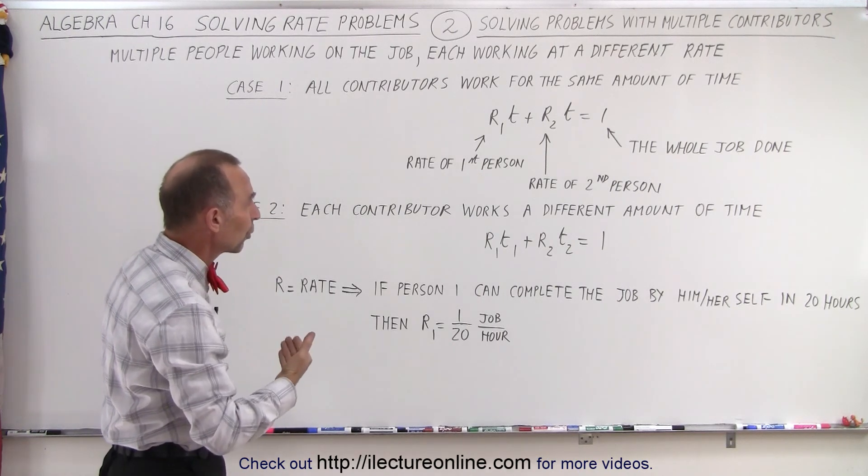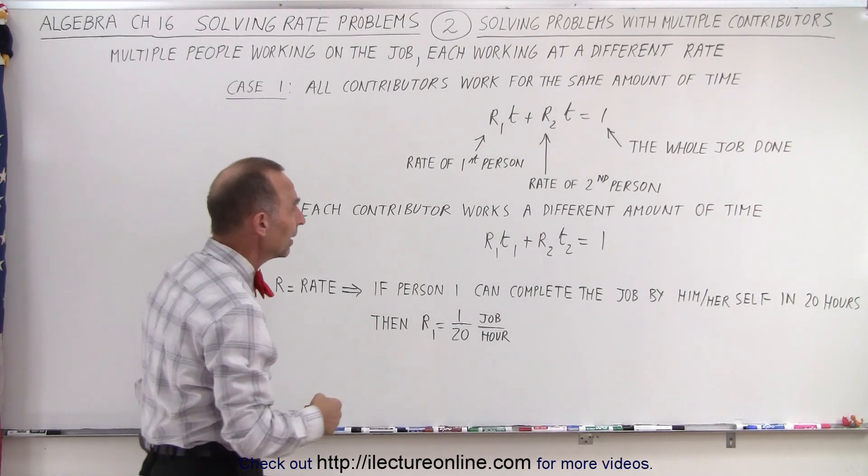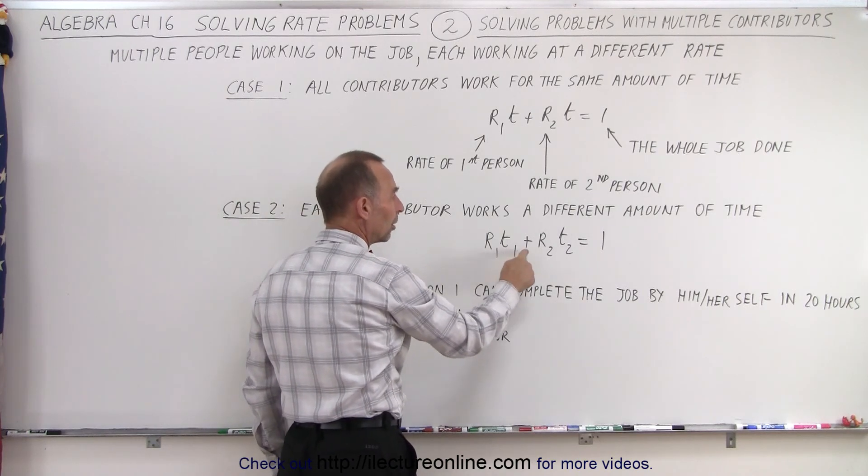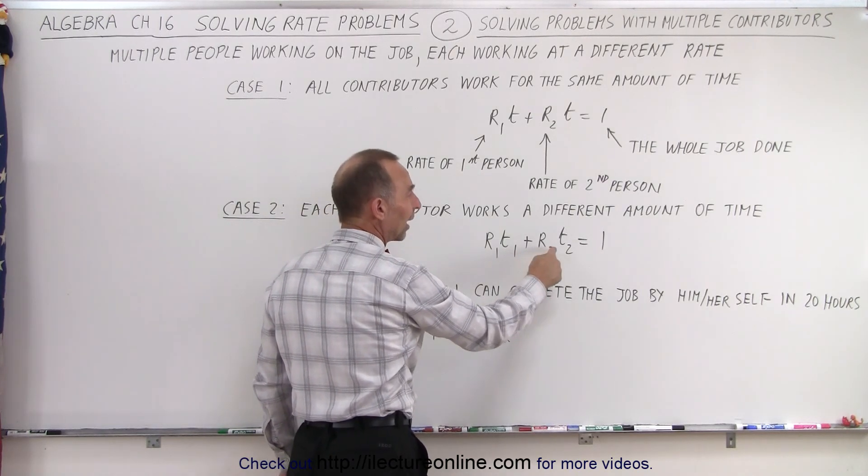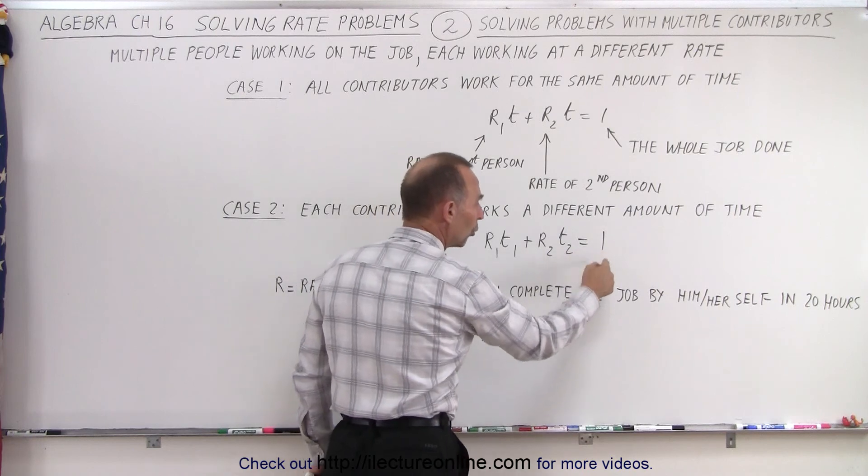Or, if each contributor works a different amount of time, then it's the rate of the first person times how long they work, plus the rate of the second person times how long they work, equals the whole job done.